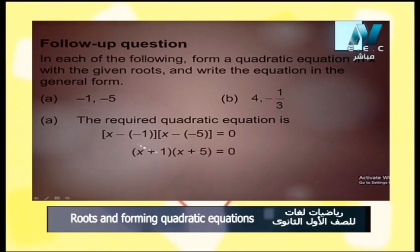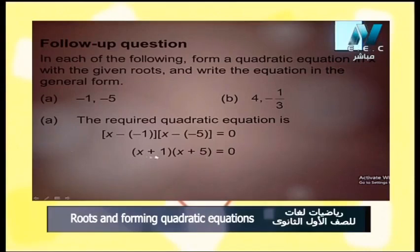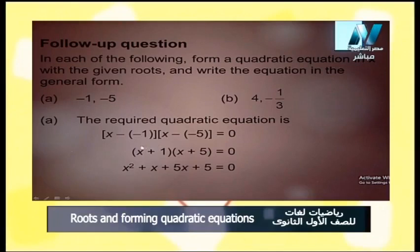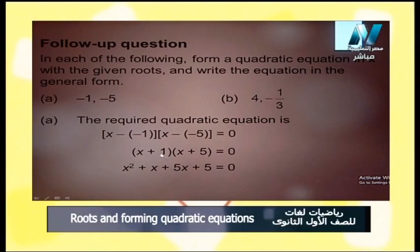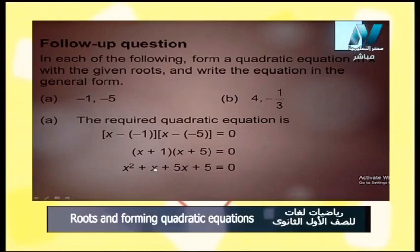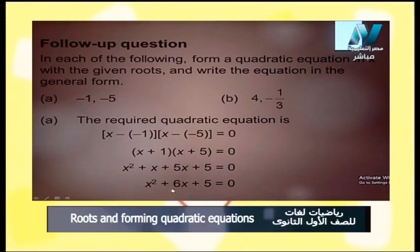Expanding x plus 1 multiplied by x plus 5: x times x equals x², x times 5 equals 5x, 1 times x equals x, and 1 times 5 equals 5. So 1x plus 5x equals 6x. The resulting quadratic equation is x² plus 6x plus 5 equals 0.